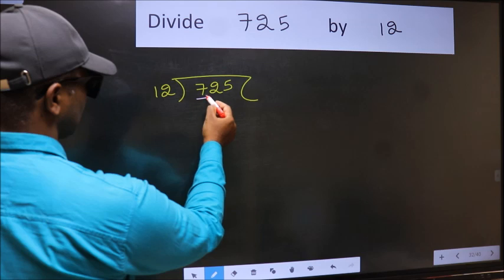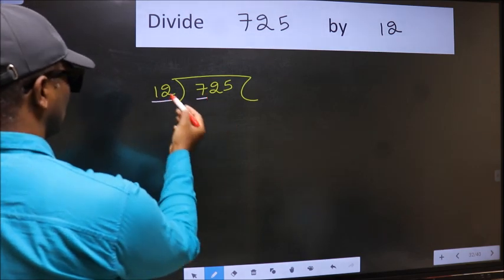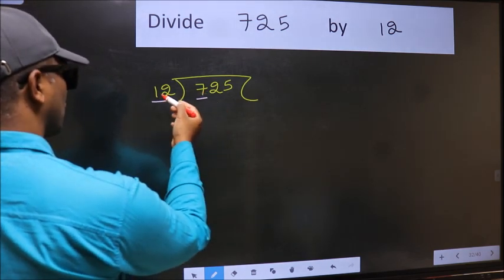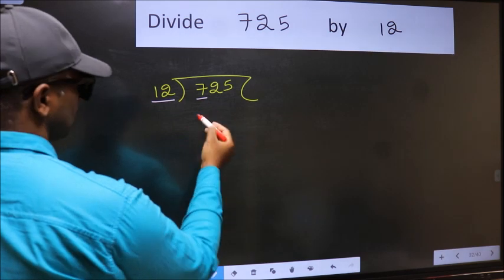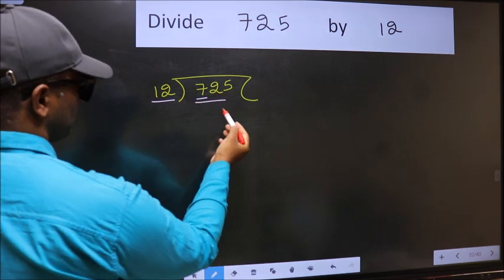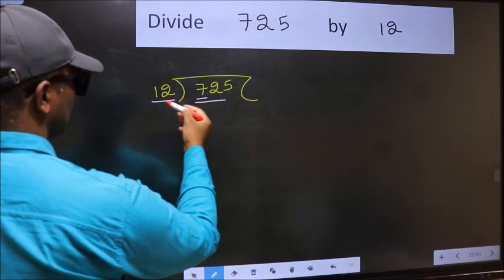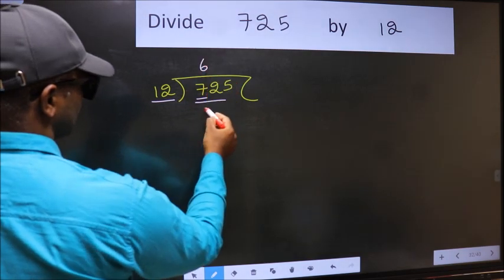Here we have 7 and here 12. 7 is smaller than 12. So we should take two numbers, 72. When do we get 72 in 12 table? 12 times 6 is 72.